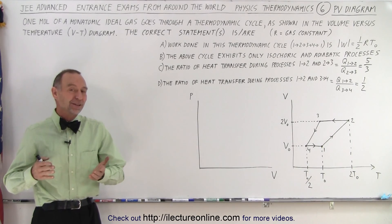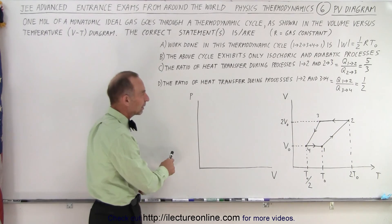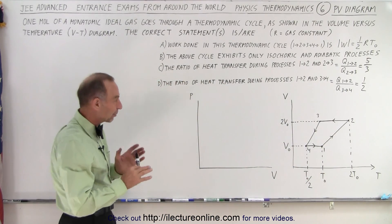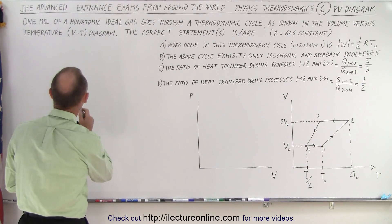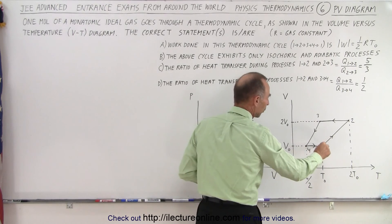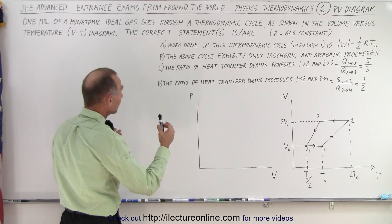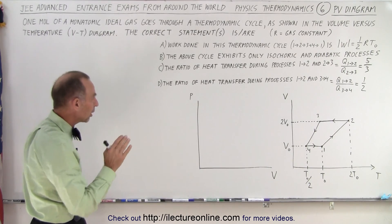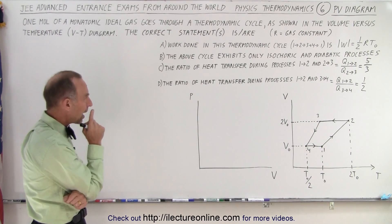Welcome to iLectro Online. Here's another interesting video on a JEE Advanced problem in thermodynamics. It involves a VT diagram — a volume versus temperature diagram. I always suggest that whatever diagram they give you other than PV, we try to convert to a PV diagram. Let's read the problem: one mole of a monatomic ideal gas goes through a thermodynamic cycle as shown in the volume versus temperature diagram, going from one to two to three to four back to one. They give us four statements and ask which are correct — it could be one or more.